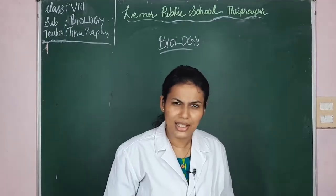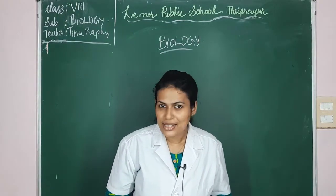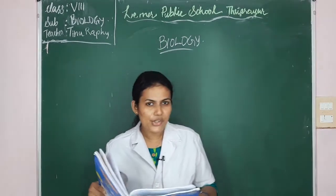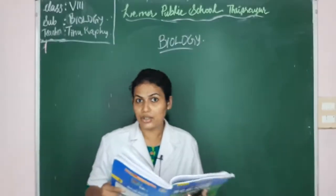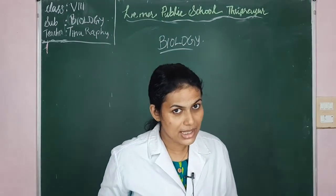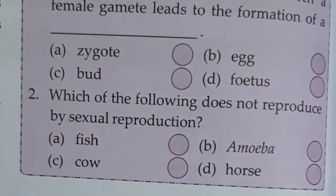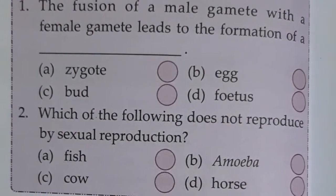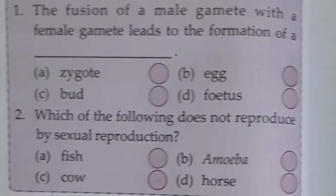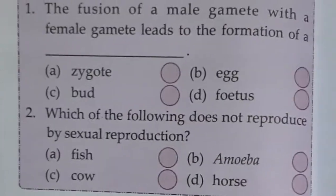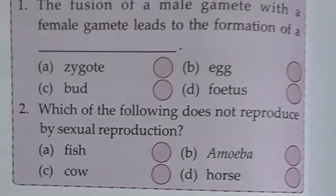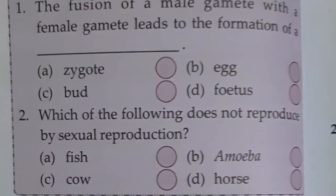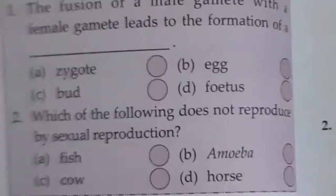Teacher gave you a small homework last day, so now let's discuss the homework from page number 98 — multiple choice questions. The first question is: the fusion of male gamete with the female gamete leads to the formation of dash. We have learned that the fusion of male and female gametes is called fertilization.